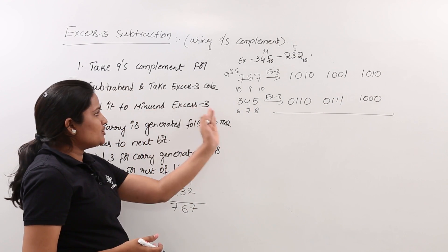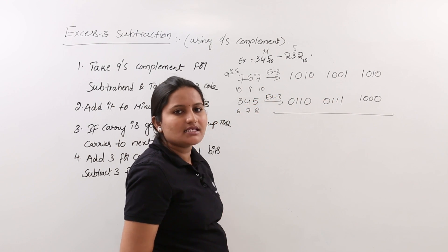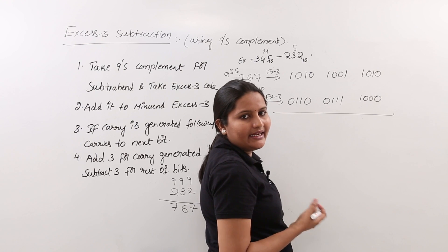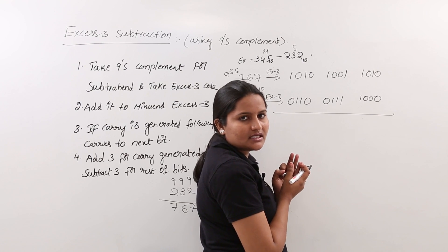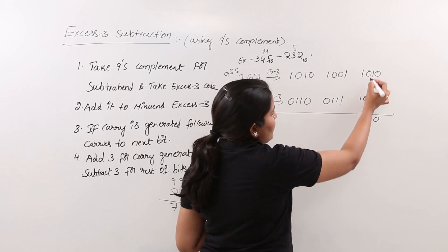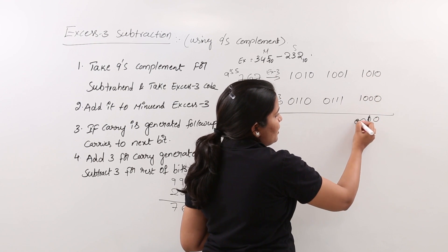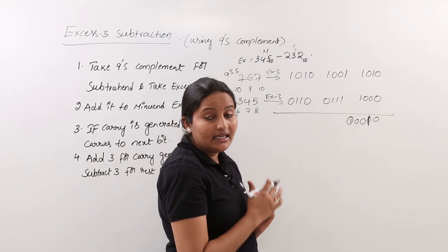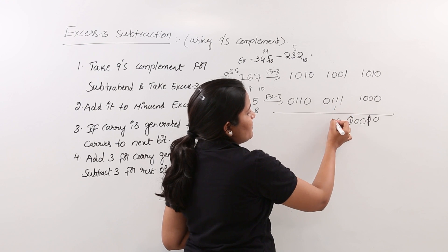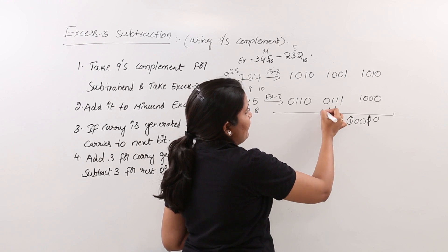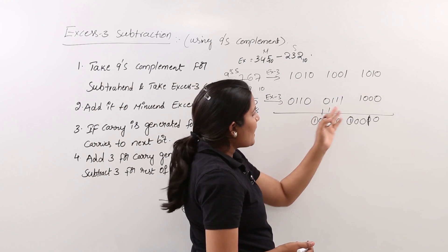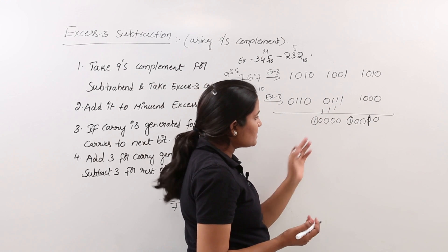Now we add the XS3 of the minuend to the XS3 of the 9's complement of the subtrahend. Adding the first group: 1010 plus 1000 gives 18, which exceeds 16, so a carry is generated. Adding the second group: 1001 plus 0111 gives 16, again generating a carry. Adding the third group similarly produces a carry.